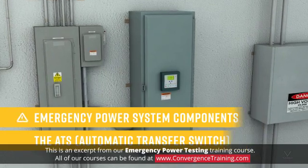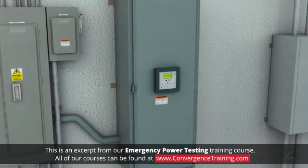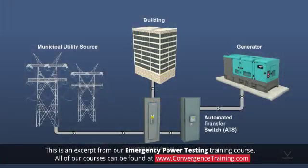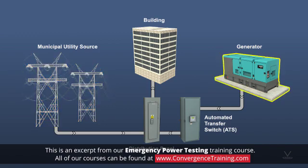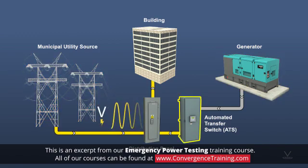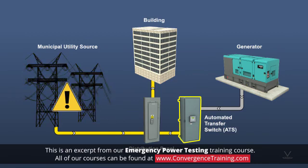The automatic transfer switch is a smart electromechanical device intended to automatically switch a load from the usual utility-supplied power over to generator-supplied power. These switches monitor utility-supplied voltage and, when the voltage drops below an average operating level for a predetermined period, usually 20 to 30 seconds, the following sequence takes place.